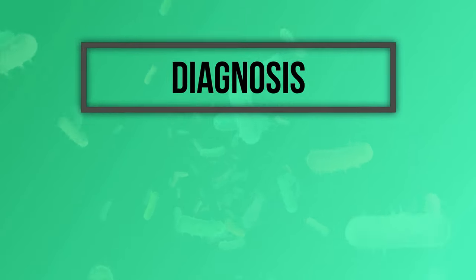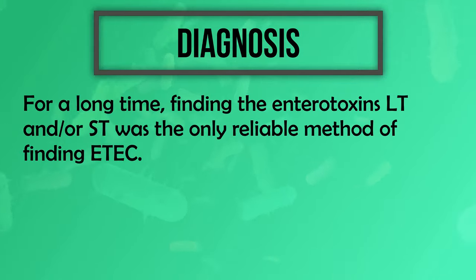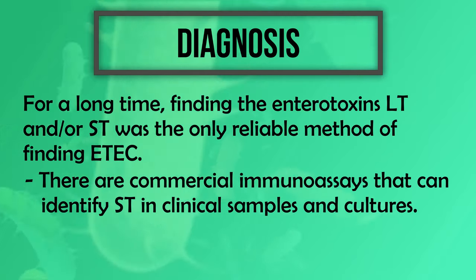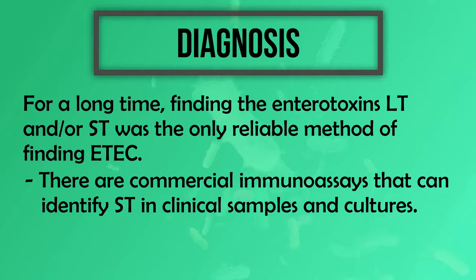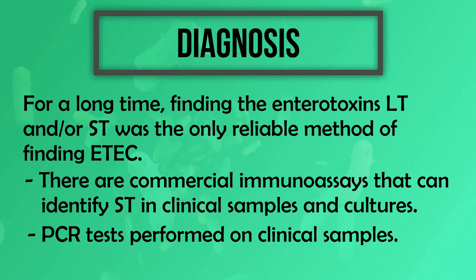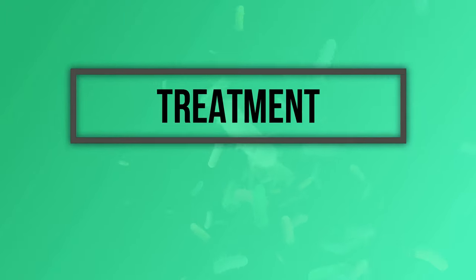For diagnosis: for a long time, finding the enterotoxins LT or ST was the only reliable method of identifying ETEC. There are now commercial immunoassays that can identify heat-stable toxins in clinical samples and cultures. The second method is PCR testing performed on clinical samples.